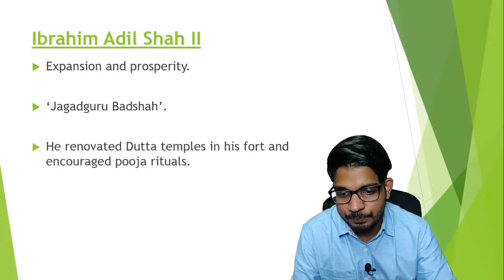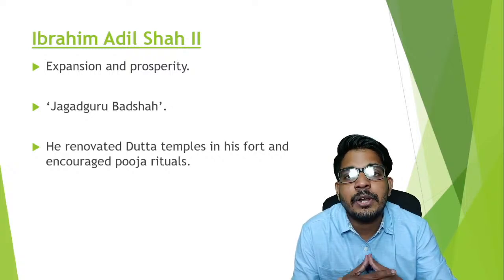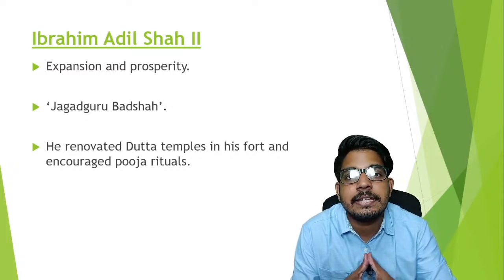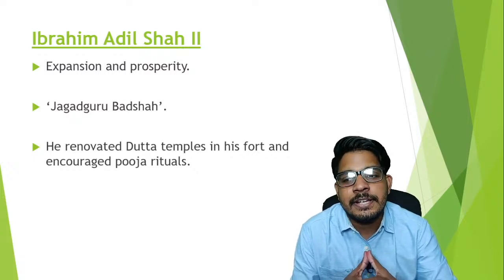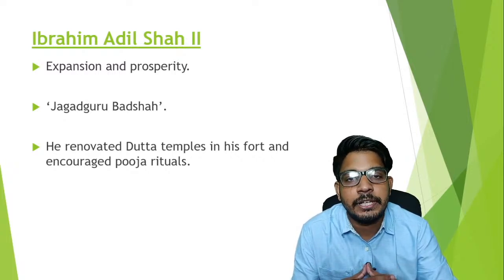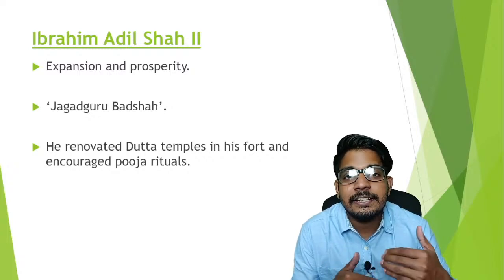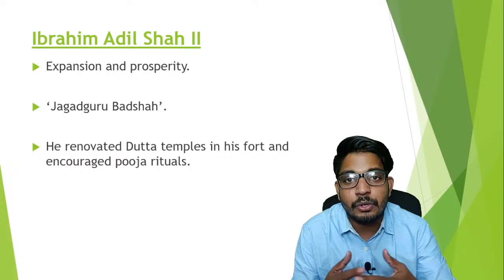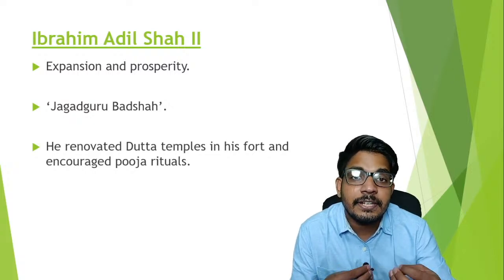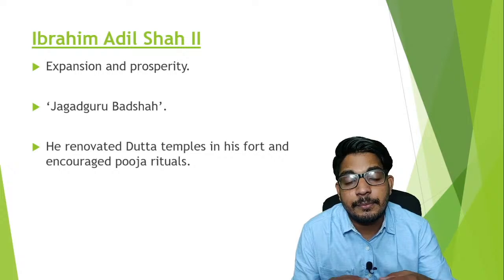Ibrahim Adil Shah II was a very secular man. Secular means he accepted all kinds of religion. Even though he was part of an Islamic dynasty, he accepted all religions. You may hear stories that Muslim sultans massacred Hindus — there is some truth in this, but it is not completely true. They didn't kill Hindus just for the sake of religion; there were political reasons, such as the desire to expand territory.